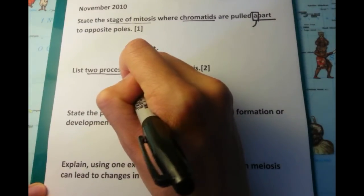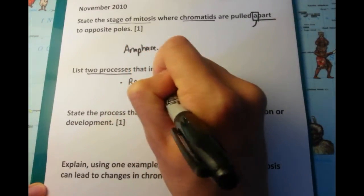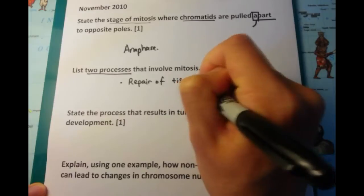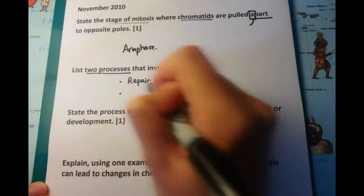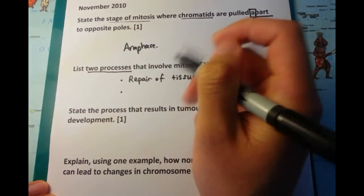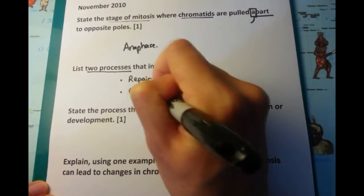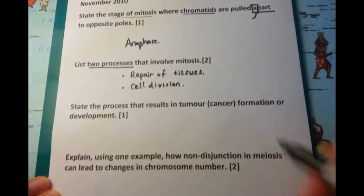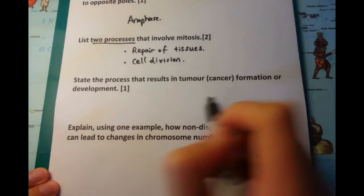Now, list two processes that involve mitosis. What I've chosen here is the first one which is repair. So if you get cut on the arm, then repair of those tissues requires mitosis. And cell division itself also requires mitosis.